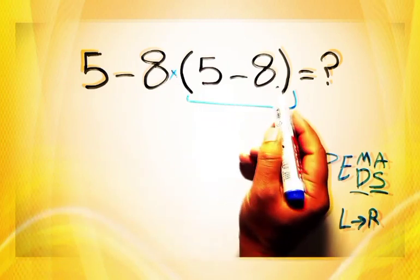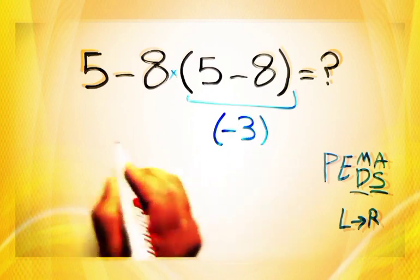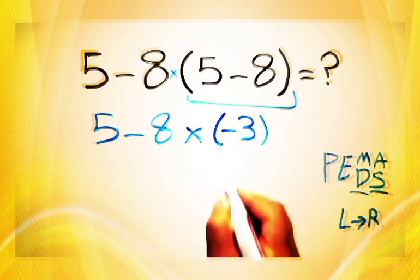So first these parentheses. Five minus eight gives us negative three. So we have five minus eight times negative three.